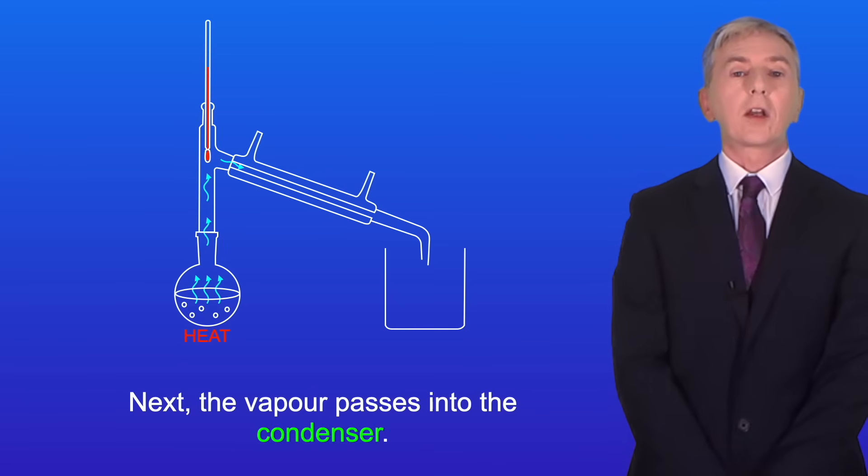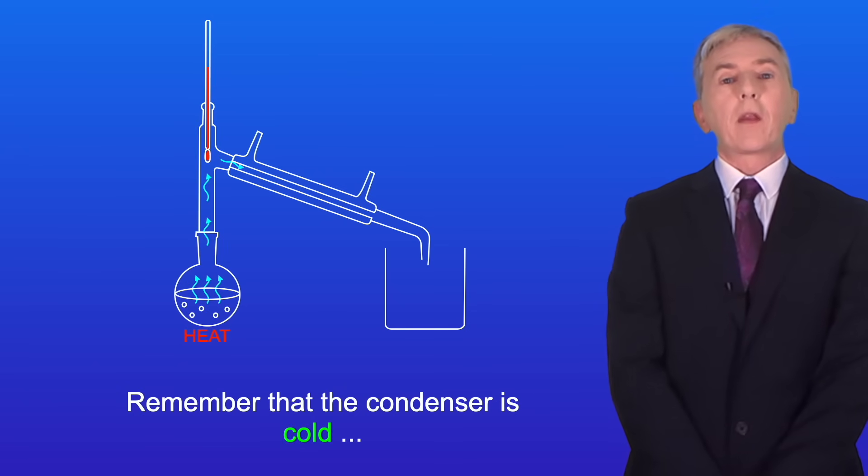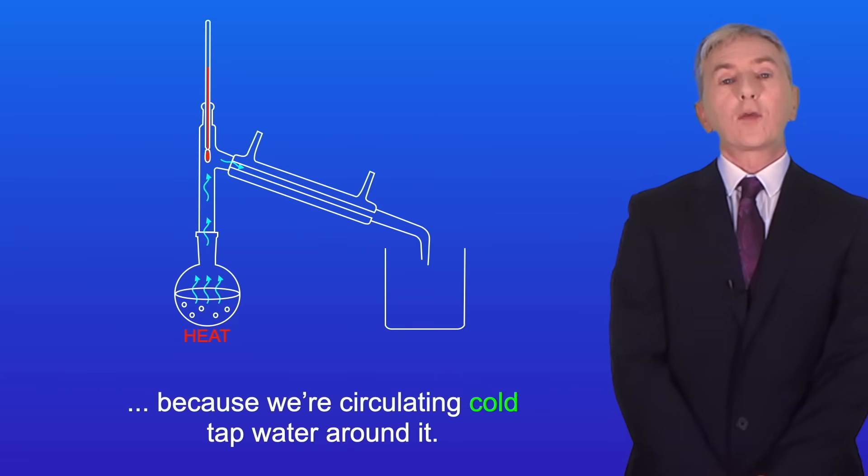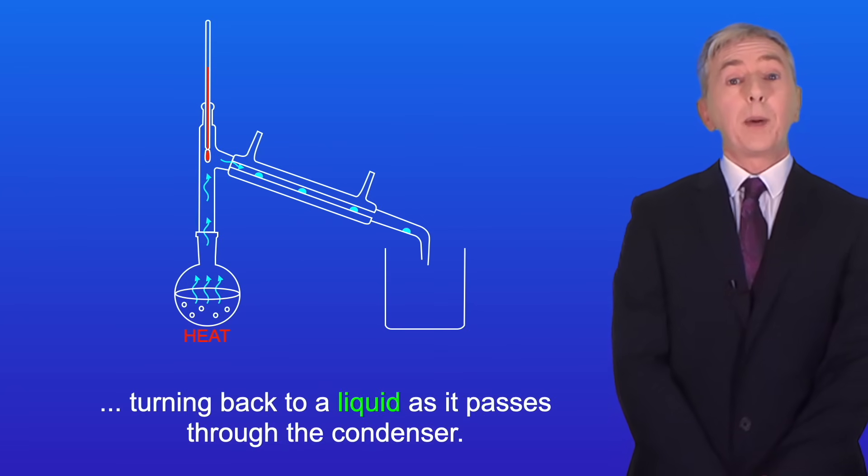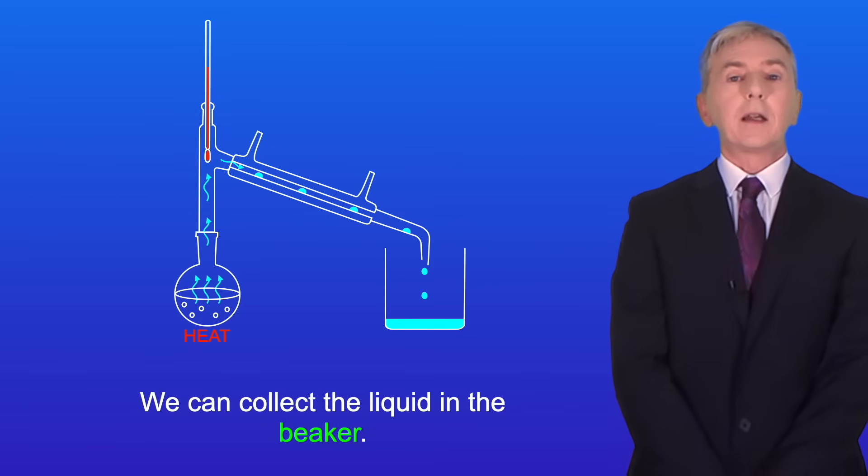Next the vapor passes into the condenser. Remember that the condenser is cold because we're circulating cold tap water around it. This causes the vapor to condense, turning back to a liquid as it passes through the condenser. And we can collect the liquid in the beaker.